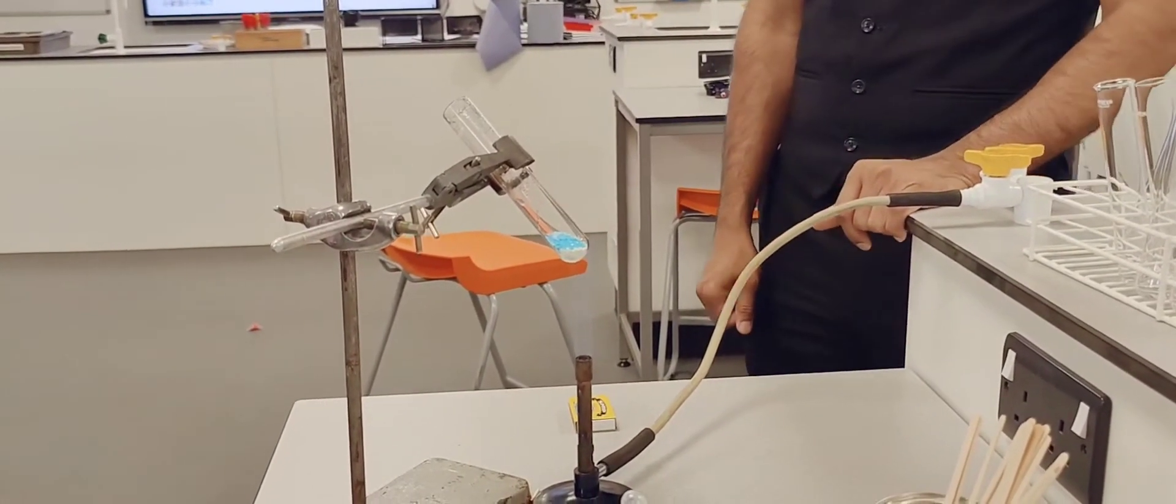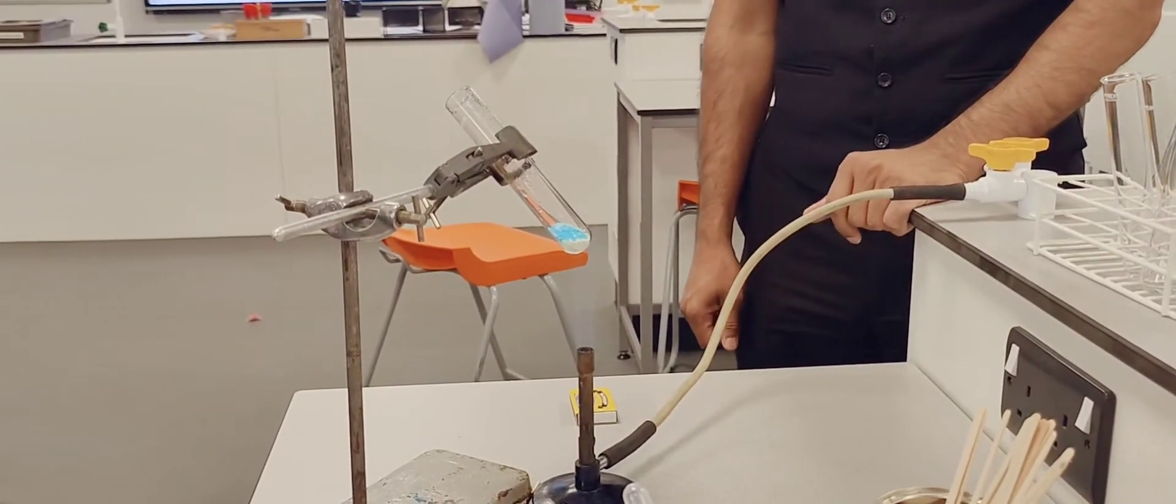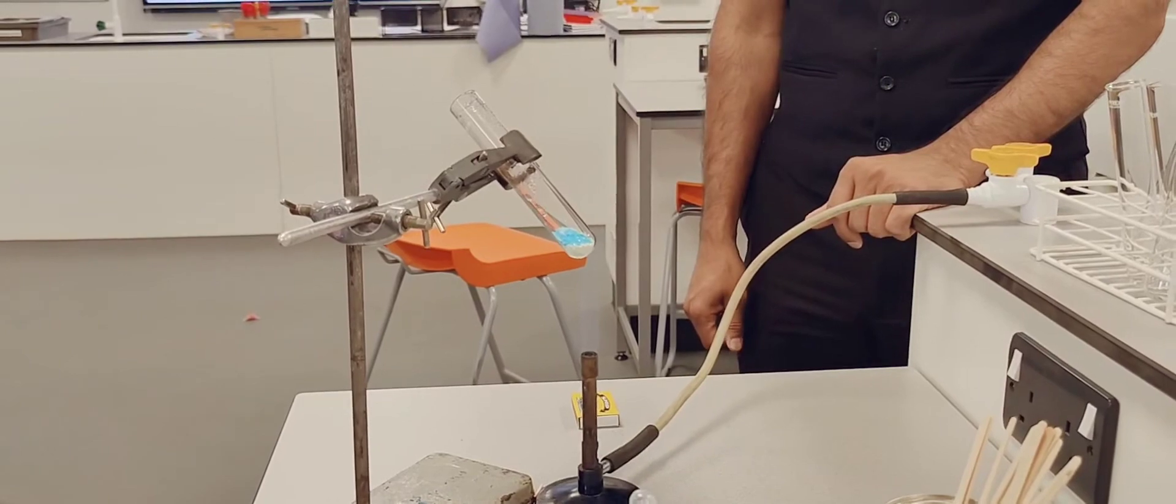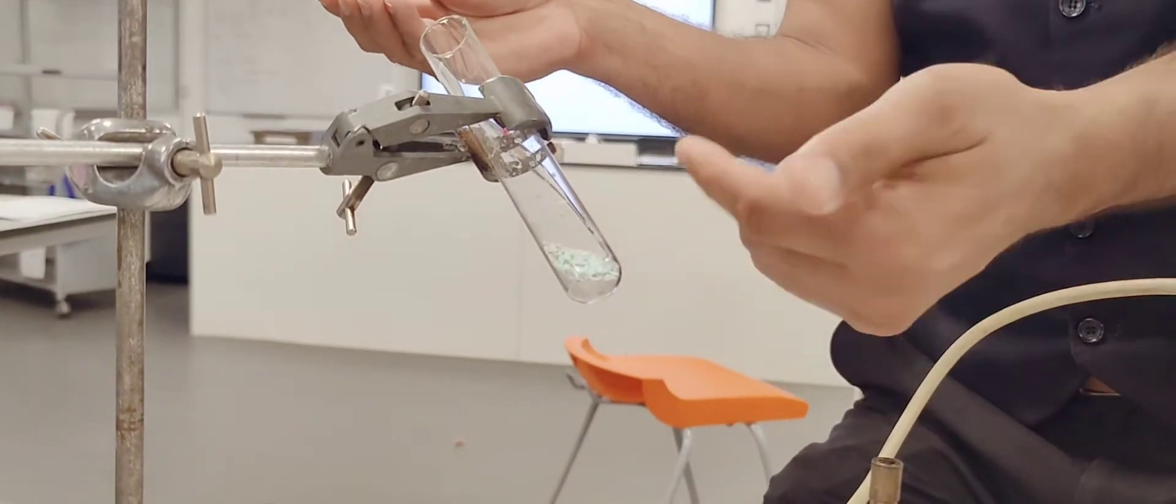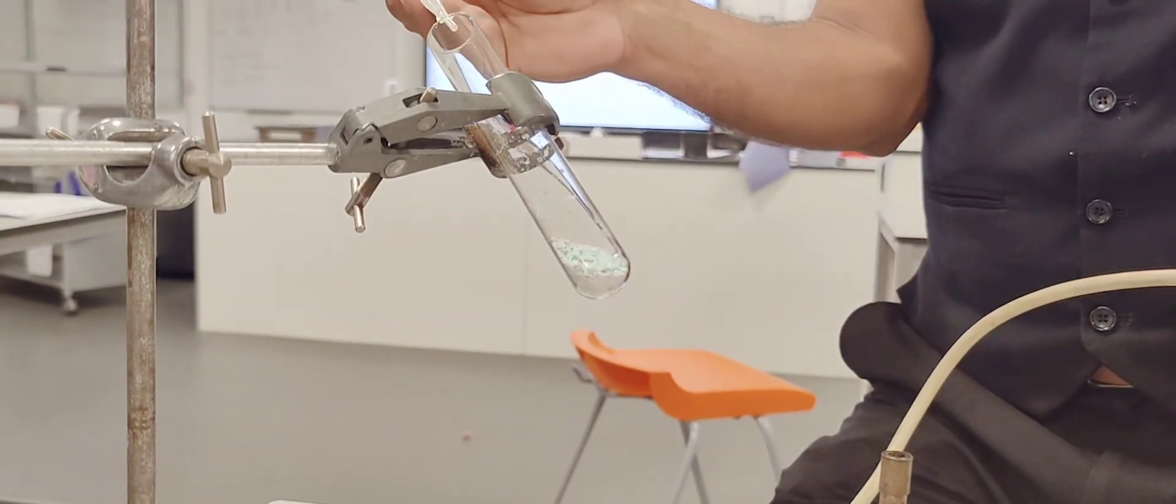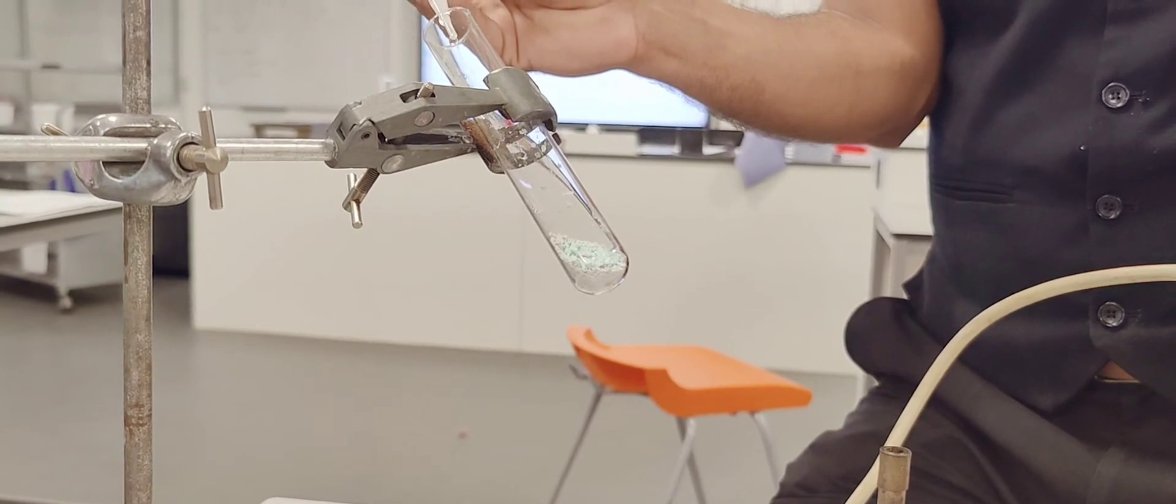Right, what we're going to do now, because all the bottom bit is converted into anhydrous, we're going to wait for three minutes and then start putting water. Right, it's been three minutes now, the anhydrous copper sulfate is cooled down. So I'm going to start adding water drop by drop. It should go back into the beautiful blue color.